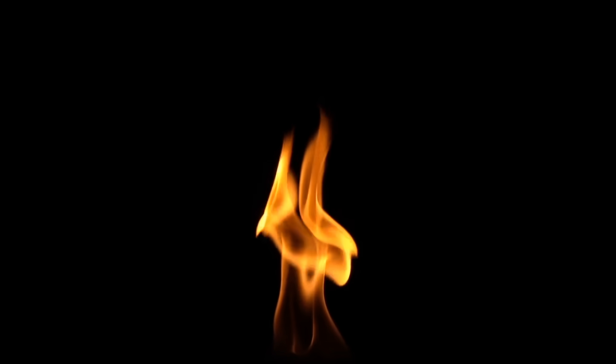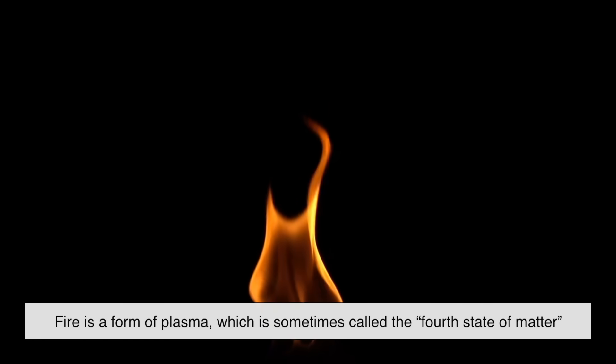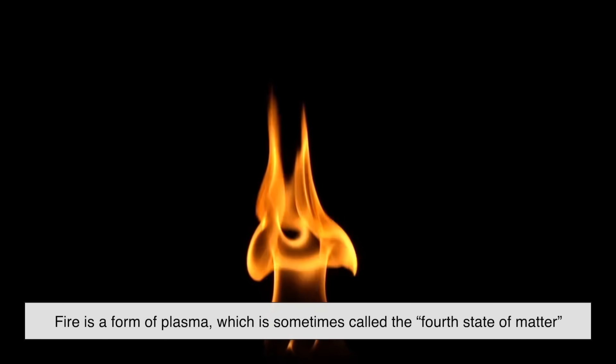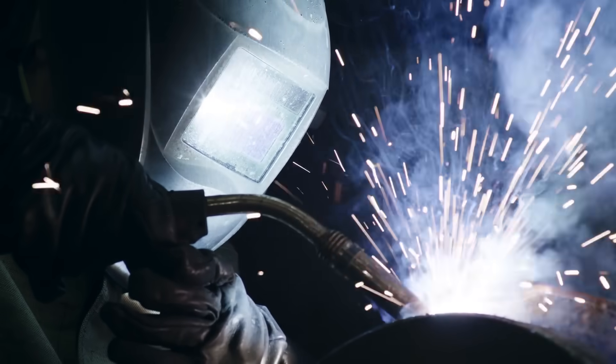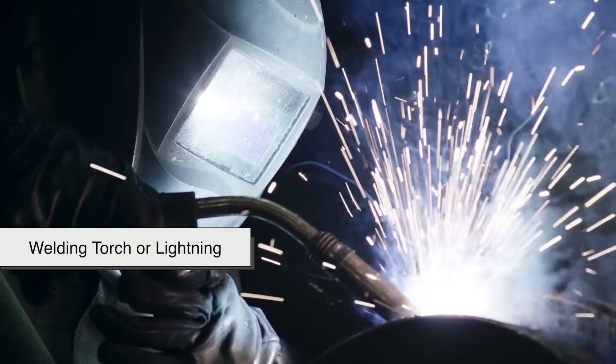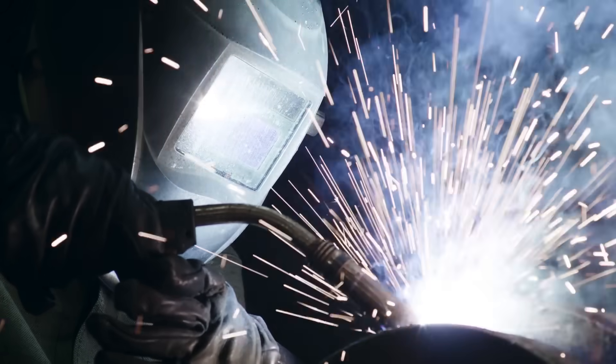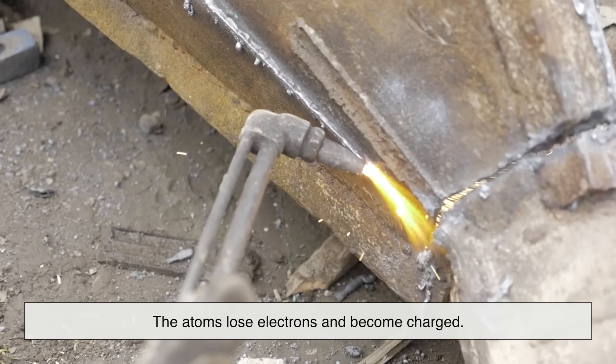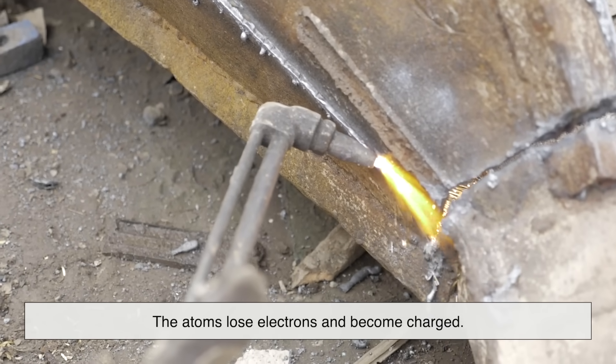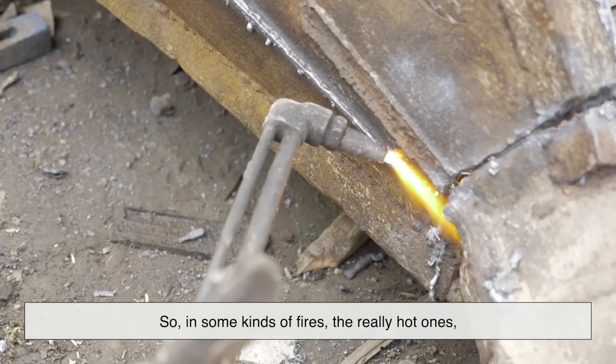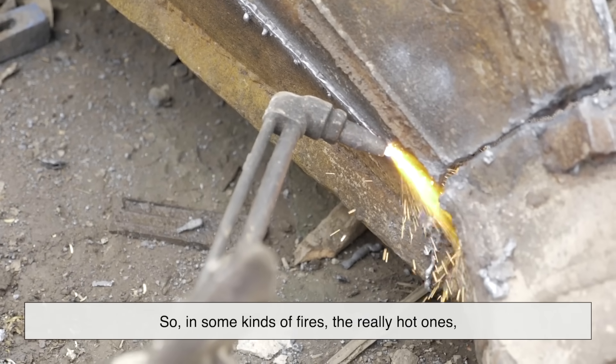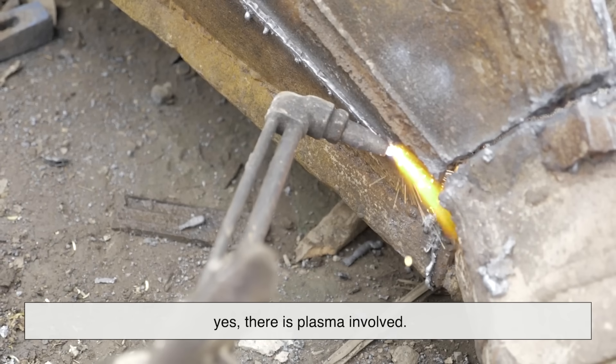You might have heard someone say that fire is a form of plasma, which is sometimes called the fourth state of matter, after solids, liquids, and gases. This is partly true. At very high temperatures, like those in a welding torch or lightning, the gases in fire become ionized, meaning the atoms lose electrons and become charged. That's the textbook definition of plasma. So in some kinds of fires, the really hot ones, yes, there is plasma involved.